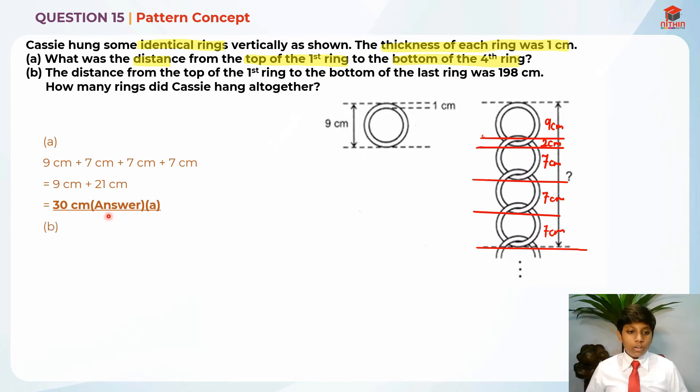Now for part B. Let's read the question. The distance from the top of the first ring to the bottom of the last ring was 198 cm. How many rings did Cassie hang all together? So let's highlight the key information. The distance from the top to the bottom is 198 cm, all the rings. How many rings did Cassie hang all together? First I'm going to minus off the first ring, which is 9 cm. This is because the rest of the rings are the same, which is 7 cm.